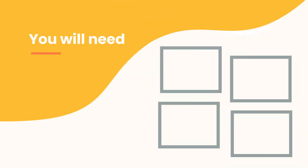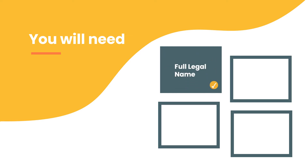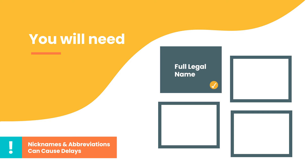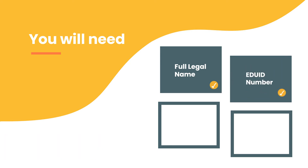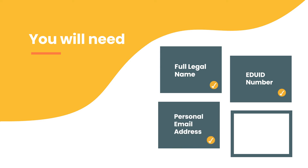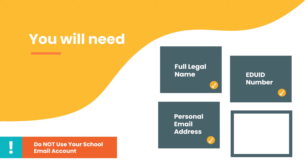To use Apply Idaho, you will need your full legal name as it appears on your birth certificate. Nicknames and abbreviations can cause delays or prevent you from completing the registration process. You will also need your EDUID number — school counselors can help look this up for you. Additionally, you will need your personal email address.